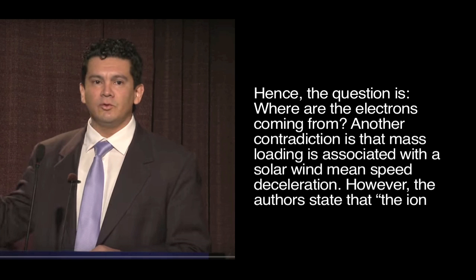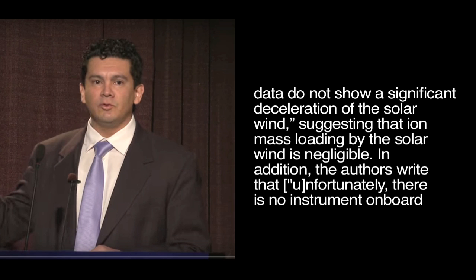Hence, the question is, where are the electrons coming from? Another contradiction is that mass-loading associated with the solar wind means speed deceleration. However, the authors state that the ion data do not show a significant deceleration of the solar wind.